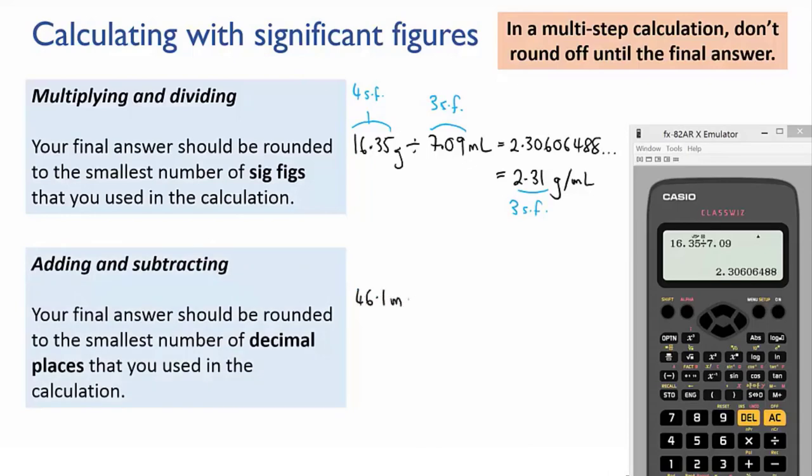For instance, if I add 46.1 meters to 0.901 meters, calculator tells me the answer is 47.001 meters. But 46.1 has only one decimal place. So my final answer must also be rounded to one decimal place. So the answer is 47.0 meters.